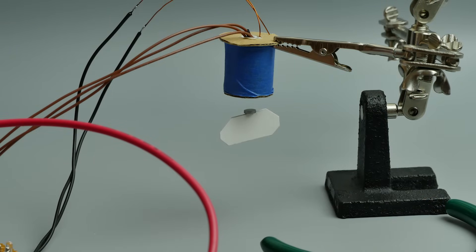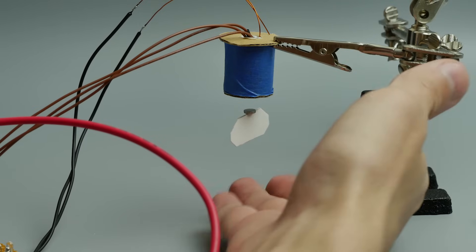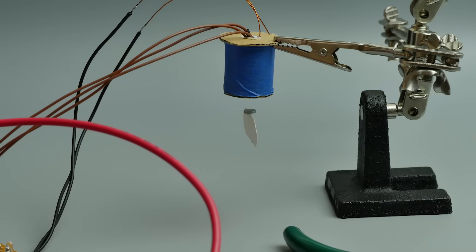By the way, do not forget to look which side of the magnet is attracted to the coil. Actually now everything is more or less running, and we can align and secure the sensor.